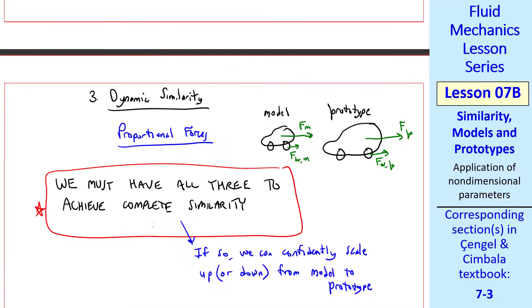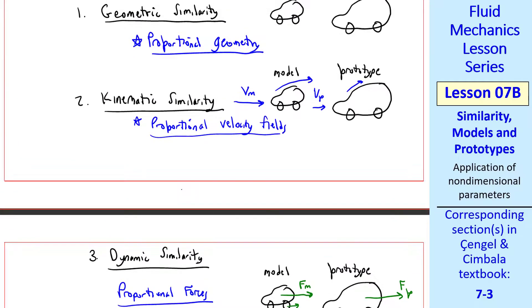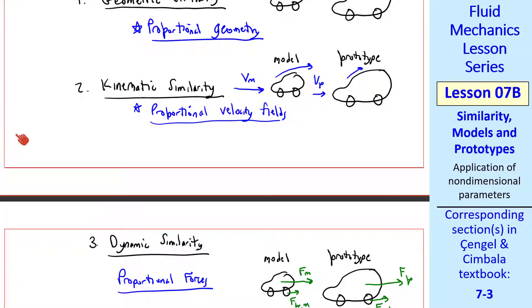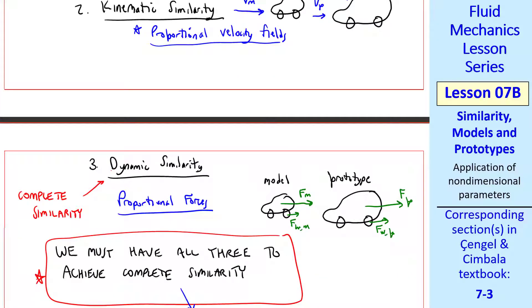I should mention that of these three types of similarity, you can't have kinematic similarity without first having geometric similarity, and you can't have dynamic similarity without having kinematic similarity. That's why we say that dynamic similarity is complete similarity.